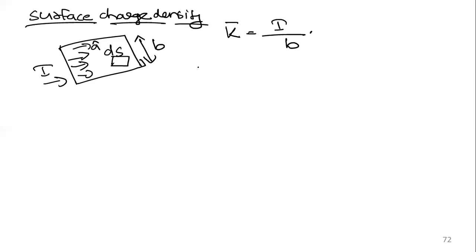You might have one doubt: since this is surface charge density, why is it in ampere per meter and not ampere per meter squared? Surface charge density K = I/b along vector a, in ampere per meter — not ampere per meter squared — because we take the flow of surface current along one direction. That is why we took it as per meter only, not per meter squared, even though we call it surface charge density.